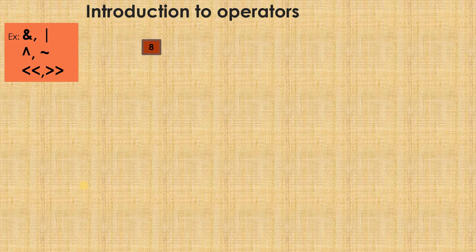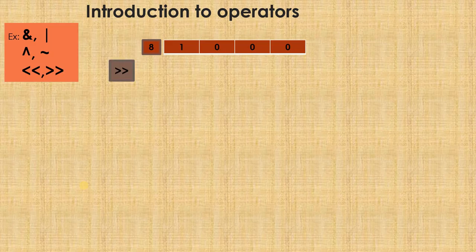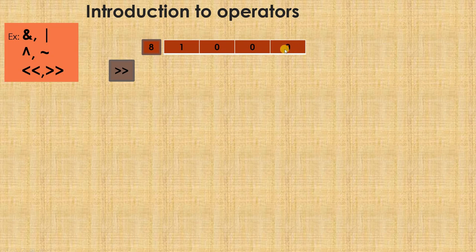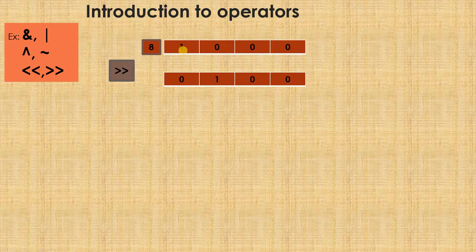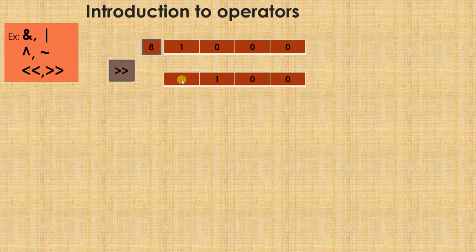Let us consider the number 8. How do we represent 8 in binary? It is 1 0 0 0. Now I will use the operator called right shift — the arrow marks are towards the right side and hence it is called right shift. When I use the right shift operation, the MSB value shifts right, then this value shifts right, this value shifts right, and the LSB value gets vanished. A new 0 is added in the first place, so after 1 right shift the number appears like this: the 1 got shifted to the next place, the 0s shift along, and a new 0 is inserted at the beginning.